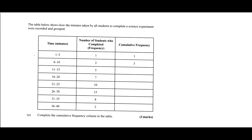Looking at the first row, the interval is between 1 and 5 minutes and we have one student who completed the experiment within that time frame. In the next row we have two students completing in a time between 6 and 10 minutes. The first part of the question asks us to complete the cumulative frequency column in the table.